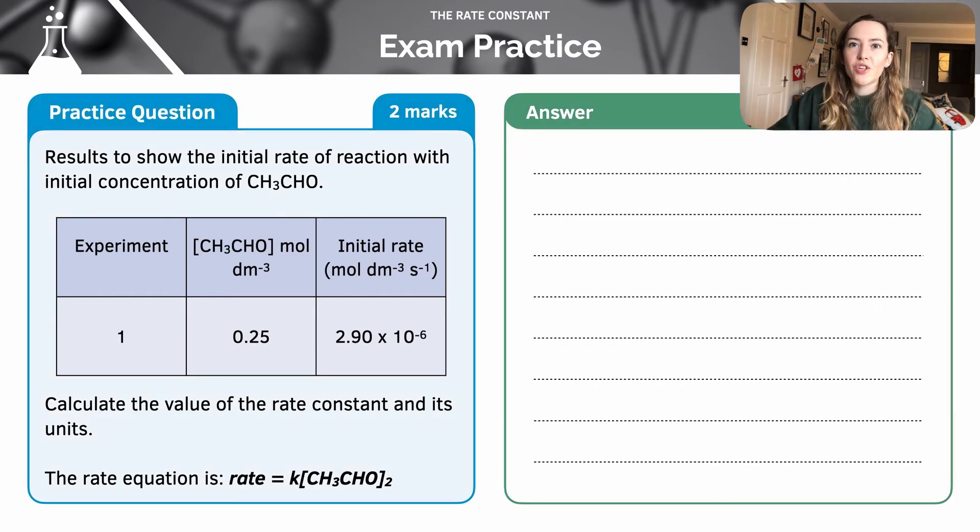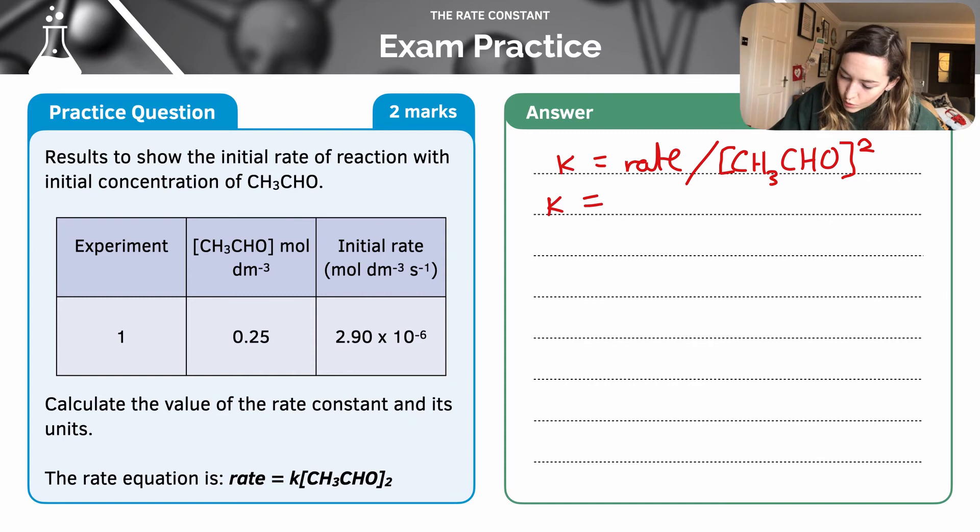First thing we need to do is to rearrange our equation to make k the subject. So k is going to be equal to rate divided by my concentration of my reactant to the power of 2. Then I can plug my values in. So k is equal to rate, 2.90 times 10 to the minus 6.